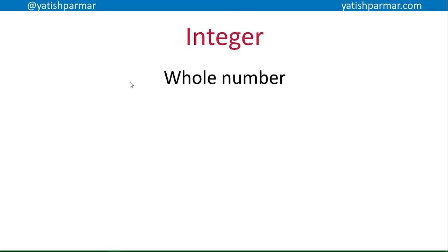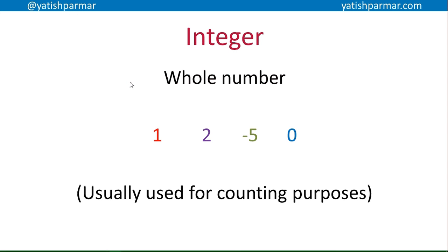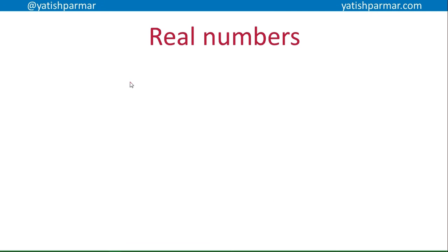Of the five data types, number one is integers, which are whole numbers — you should know that from maths. Examples include 1, 2, -5, 0. Integers are usually used for counting and accounting purposes; for example, when you're coding and writing a loop counter — i, j, whatever — you're using an integer there.